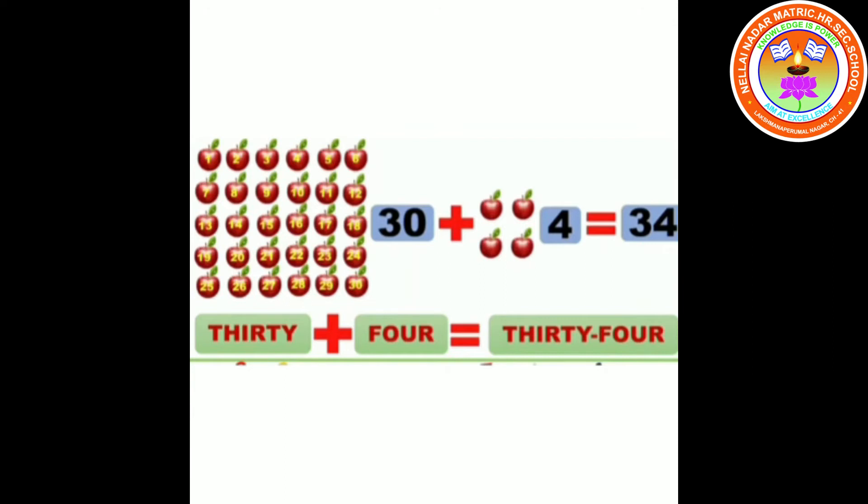34. 30 plus 4 equals 34. T-H-I-R-T-Y, thirty. F-O-U-R, four.